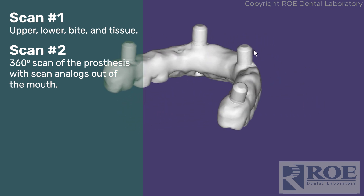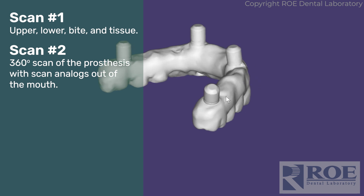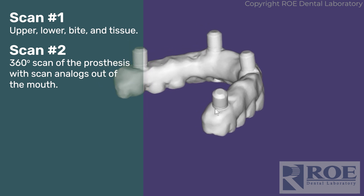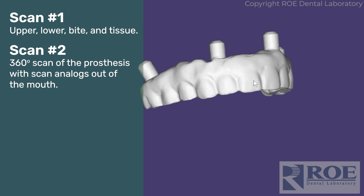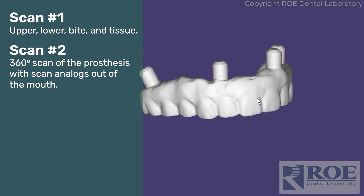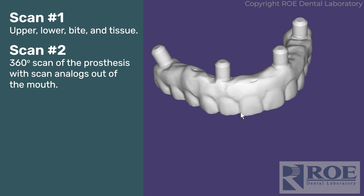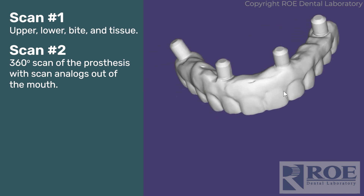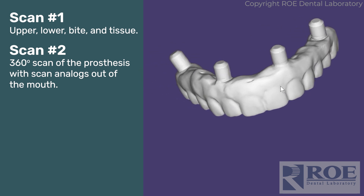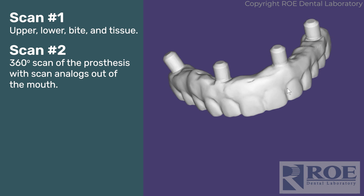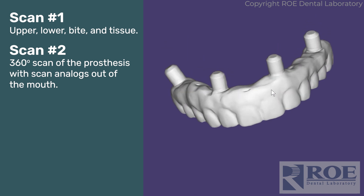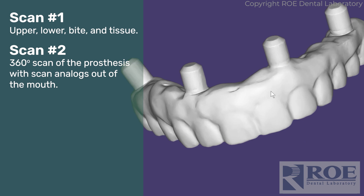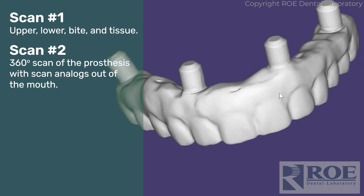Use the Grammatry scan analogs or the IG scan analogs, whichever applies. The scanner should allow you to take what you already scanned in the mouth and continue scanning around the arch, picking up where you left off. All you have to do is add the intaglio, or if not, just hold the prosthesis in your fingers and scan it 360 degrees.